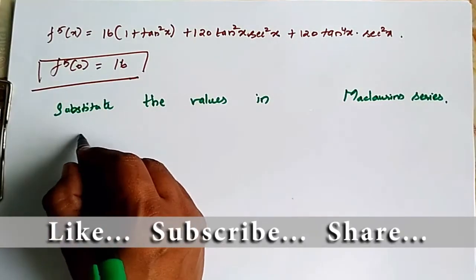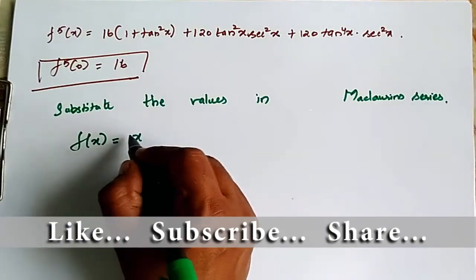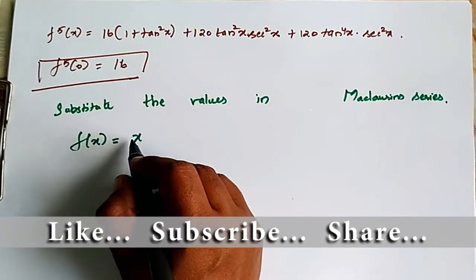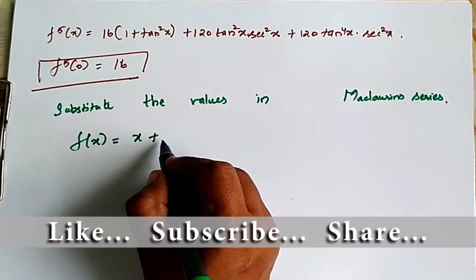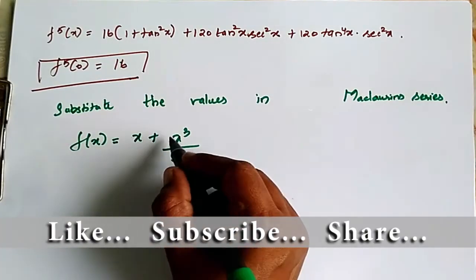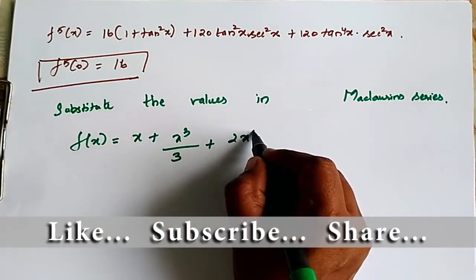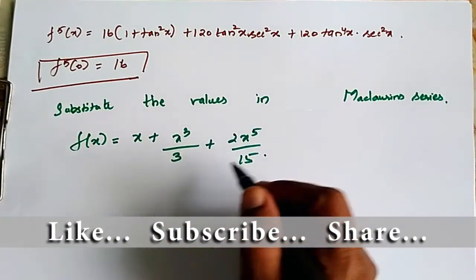So f of x is equal to, first term is 0, then x, f double dash 0 is 0 so that term cancels, then simplifying, x cube by 3, the 2 and 3 cancel, next plus 2x power 5 by 15.